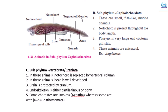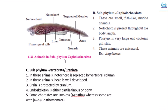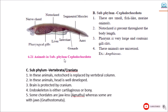Subphylum Vertebrata or Craniata: In this animal, notochord is replaced by the vertebral column. The head is well developed, the brain is protected by the cranium, and the endoskeleton is either cartilaginous or bony. Some chordates are jawless, also known as Agnatha. Whereas some are with jaws, meaning Gnathostomata.